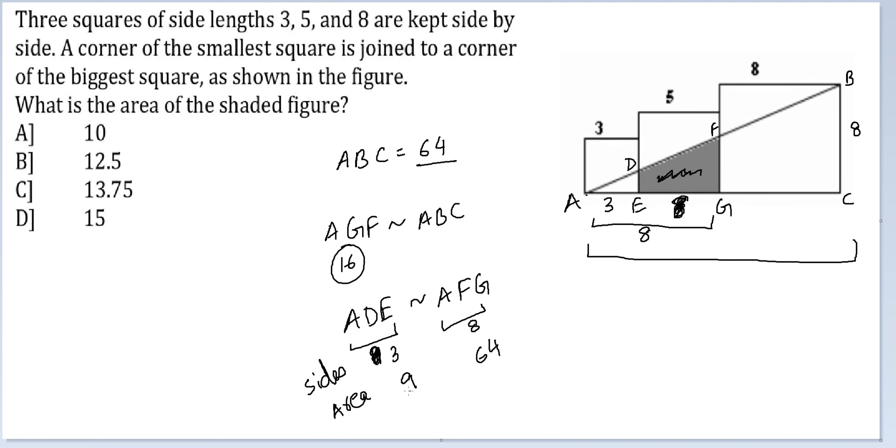ADE is 9 by 64 of 16. So from 16, if I am removing 9 by 64 of 16, what I am effectively doing is 16 into 55 by 64.